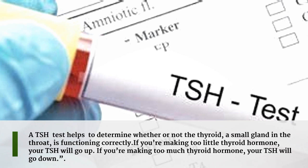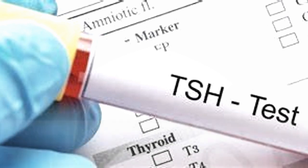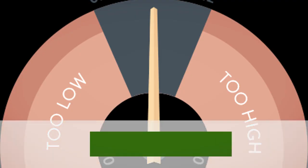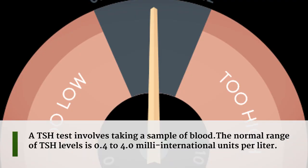If you're making too little thyroid hormone, your TSH will go up. If you're making too much thyroid hormone, your TSH will go down. A TSH test involves taking a sample of blood.